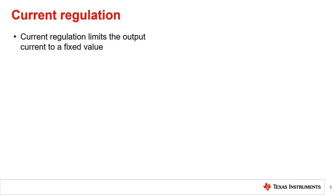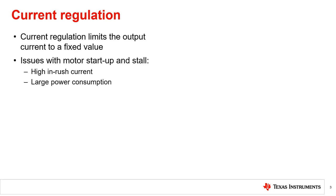Current regulation is used in motor drivers to limit the current at a fixed value. Regulating current in motor drivers is very important to ensure the motor operates below a current level that is safe for the motor system. During the initial startup of brushed DC motors, for example, there is always high inrush current. This inrush current can potentially damage the motor and the motor driver, and can also drain unnecessary power, which is not ideal for battery-powered applications. Motor drivers with current regulation circuitry can limit this inrush current and eliminate these issues.